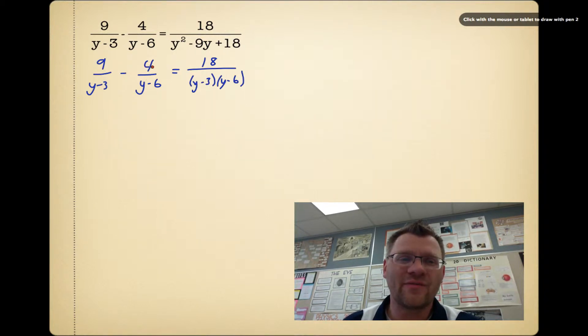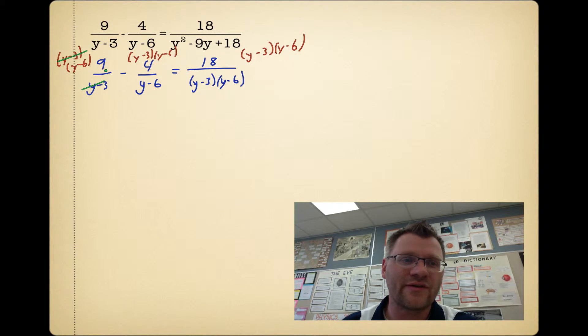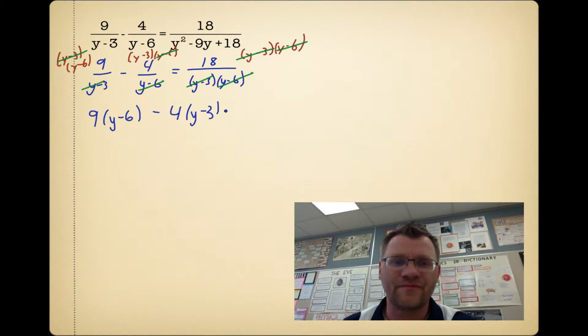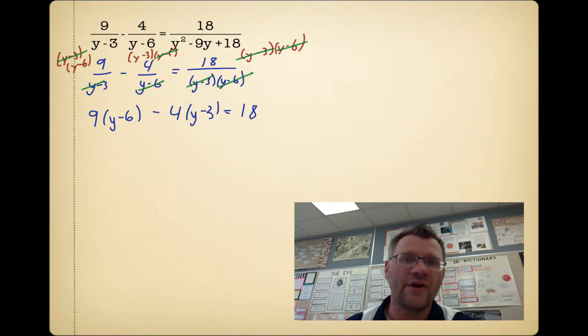I'm going to multiply each of these terms by (y-3) and (y-6). I do it to the right-hand side, and I do it to both terms on the left-hand side. Now some things cancel out. The y-3 here and the y-3 here cancel out. The y-6 and the y-6 cancel out. And here, both the y-3 and the y-6 cancel out. What I'm left with is 9(y-6) - 4(y-3) = 18. I've gotten rid of all the denominators.